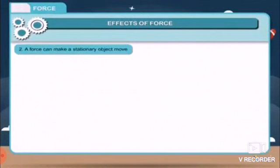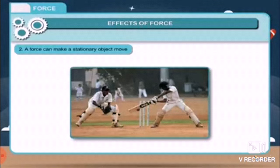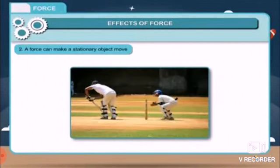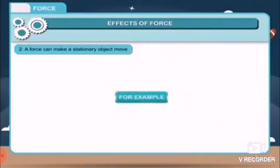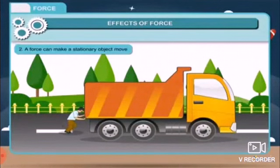Second, a force can make a stationary object move. For example, when you hit a ball with a cricket bat. It means the force can increase the speed of a moving object if force is applied in the direction of the motion of the object. However, it is not necessary that a force will always make the stationary object move. For example, if you push a heavy object like a bus or truck single-handedly, it will not move. These objects remain stationary because the force applied by us is not sufficient to move the body.